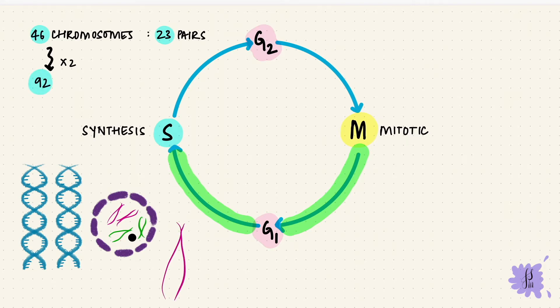These doubled chromosomes are called chromatids. Then the cell enters the G2 phase, which is the pre-mitotic phase. So that's the phase where it prepares to enter the mitotic phase. And the mitotic phase is where division happens.